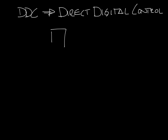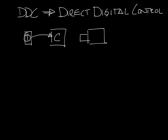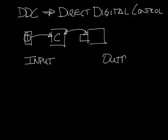As a refresher, the controller is the brains of the VAV box. It takes the set point and space temperature from the thermostat and the airflow information from the VAV box, and decides what the box needs to do — open or close the damper, turn on heat, and so on — to maintain comfort in the space. So how does it take this information and adjust the box for comfort? This is where inputs and outputs come in.